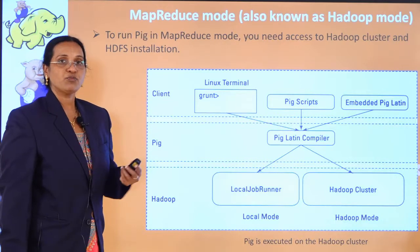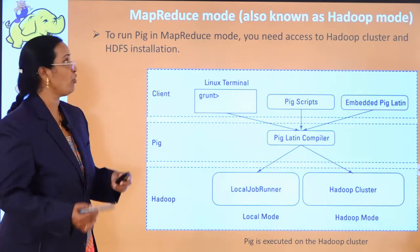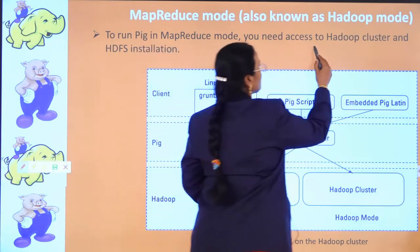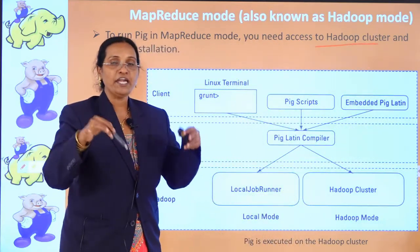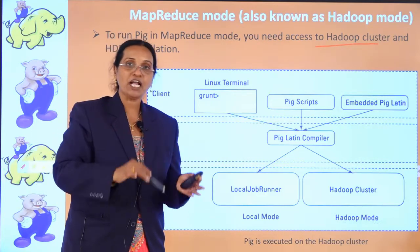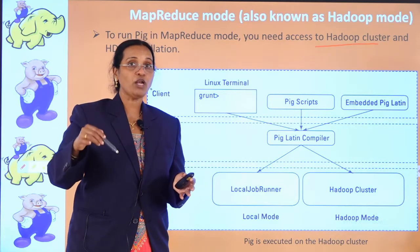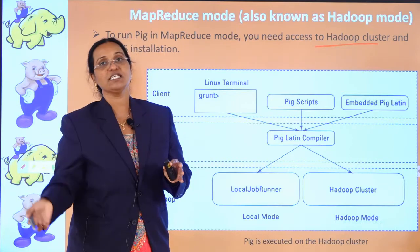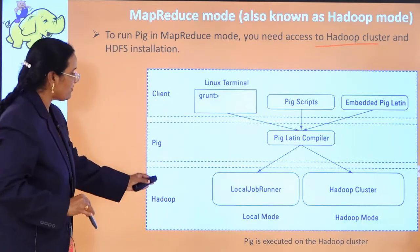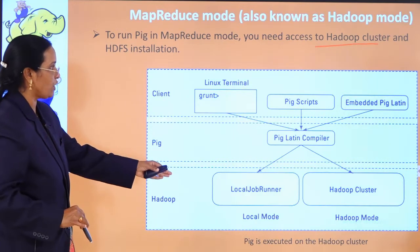Now let us look at MapReduce mode, also called Hadoop mode. In Pig's MapReduce mode, it needs to access a Hadoop cluster. The data should be present in HDFS, and the Pig commands will work on the dataset present in HDFS. In local mode, Pig commands connect to the local machine for data, whereas in Hadoop mode they connect to HDFS.